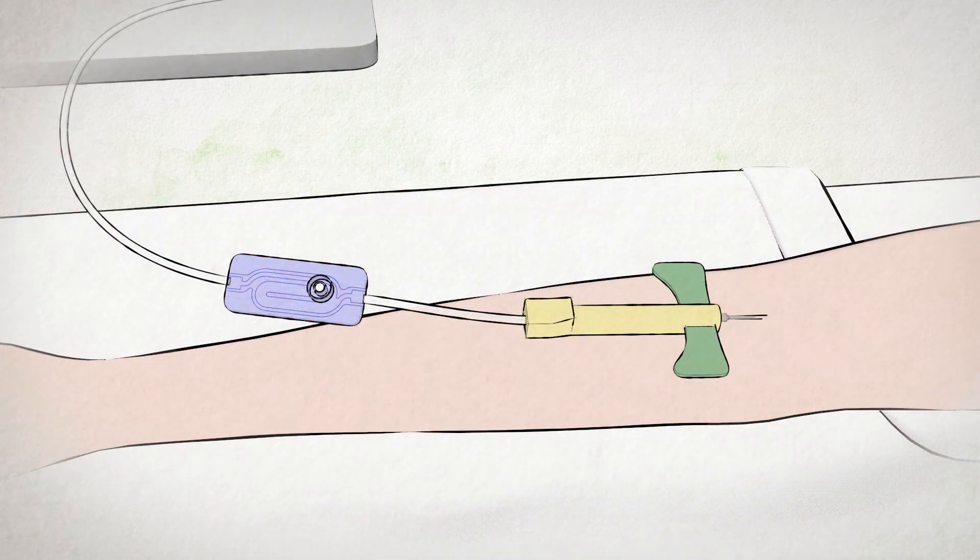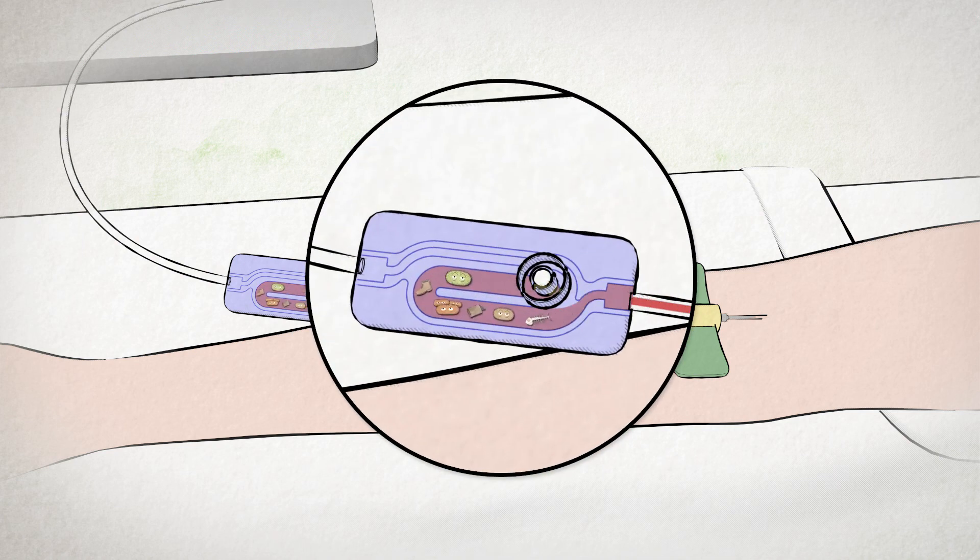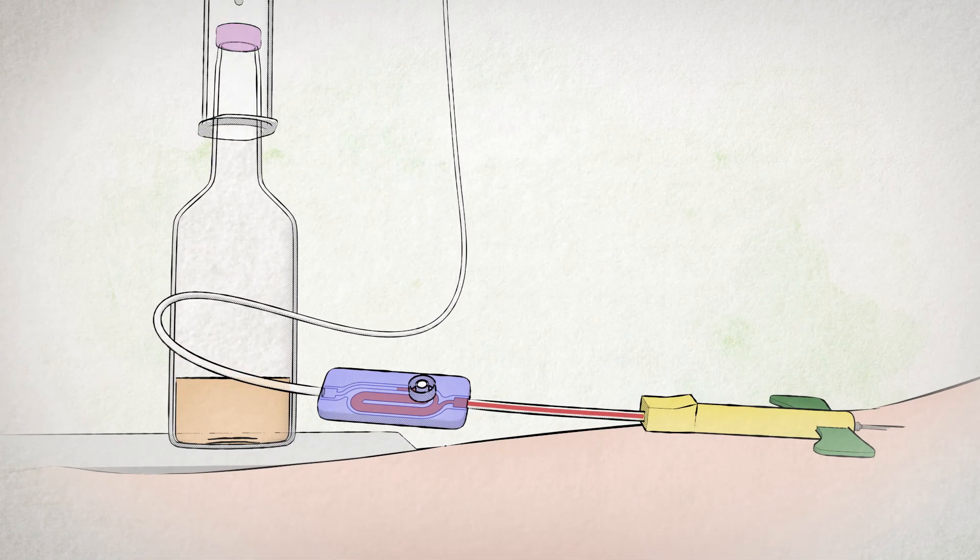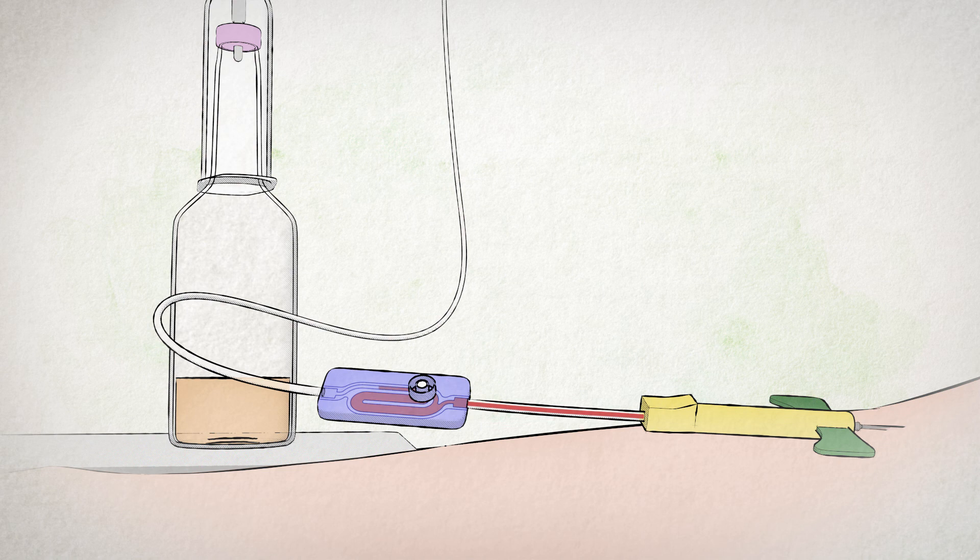A blood culture collection set that uses passive flash technology sends the initial flow of blood and contaminants therein into a U-shaped side channel. When the collection bottle is attached, the specimen flows from the vein to the bottle in a closed system through the sampling channel into the bottle.